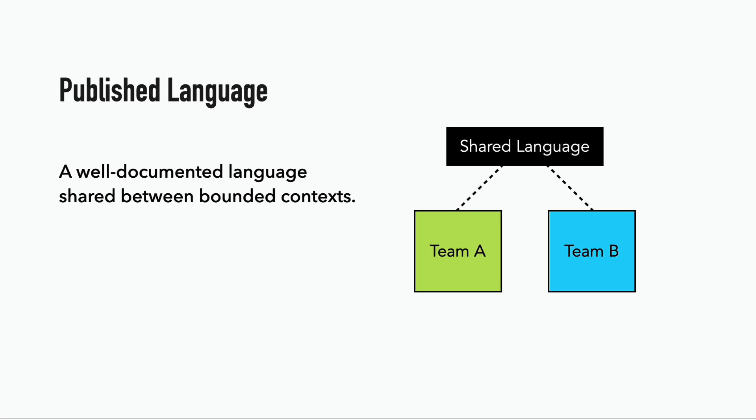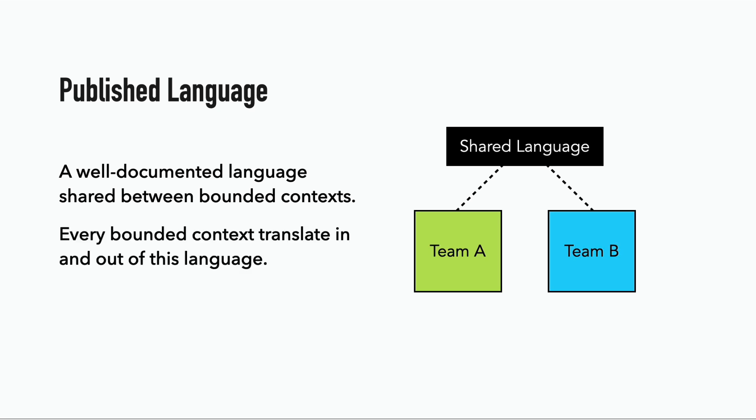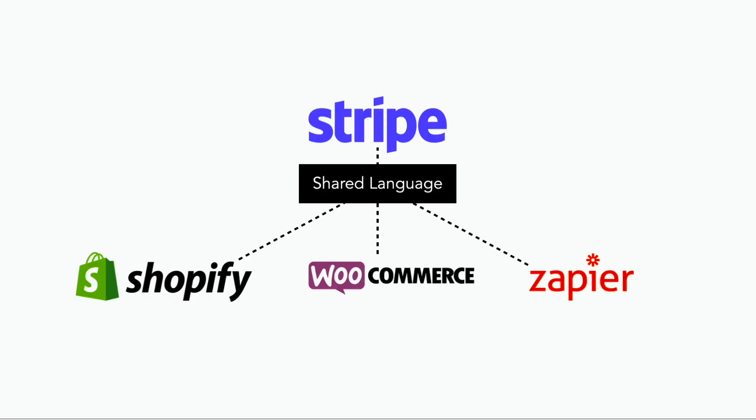Instead of a shared kernel, which tightly couples two bounded contexts through shared implementation details, they may be loosely coupled through a shared language, where every bounded context can translate in and out of this language and do the appropriate thing within their respective bounded contexts. This pattern is often combined with the open host service pattern, in which case the shared language will often come in the form of a well-defined API. For example, many e-commerce platforms integrate with Stripe for payment processing through a published language in the form of a well-defined API, where Stripe is the open host service and the e-commerce platforms each translate the messages in and out of their bounded contexts, possibly through anti-corruption layers.